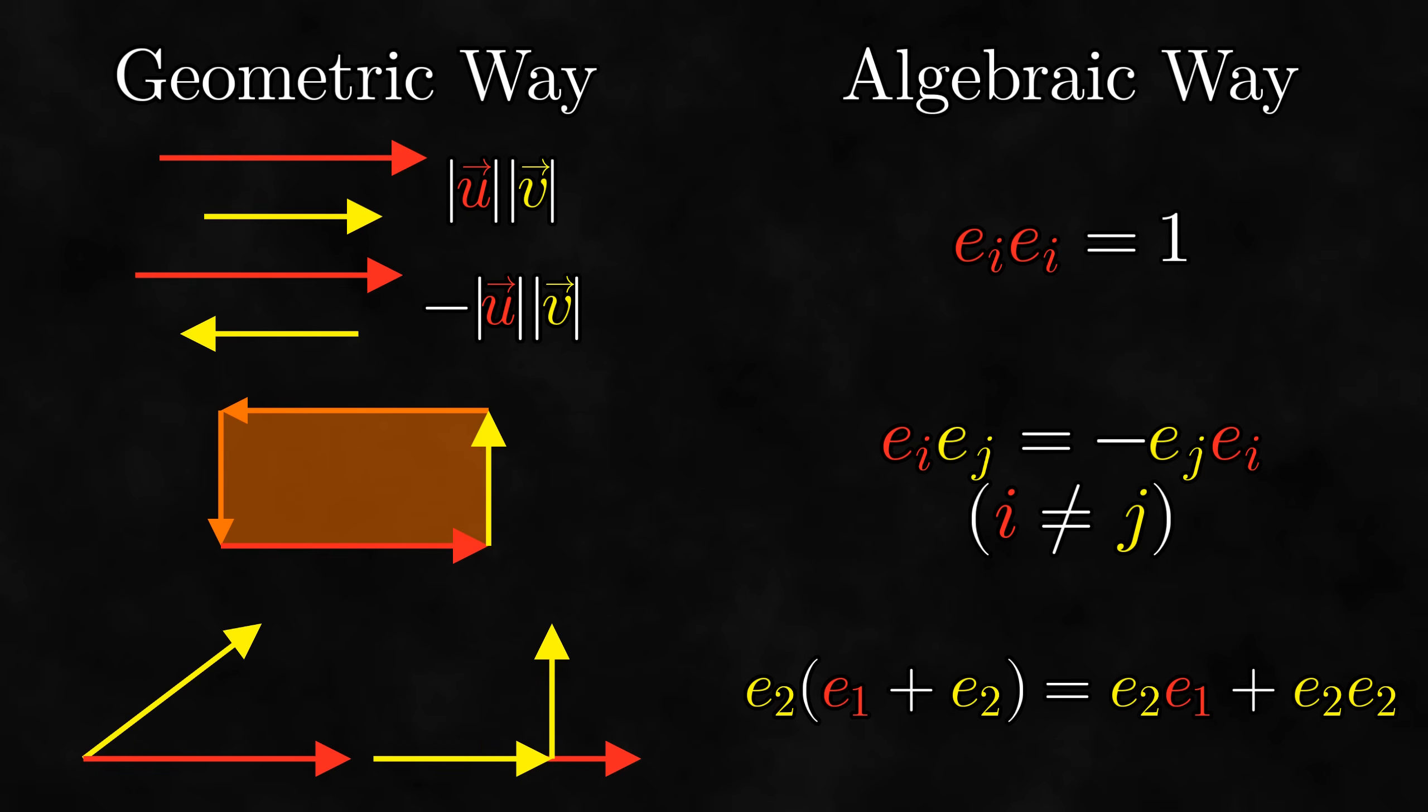Notice that we can line up the parts of the geometric and algebraic understandings of the geometric product. The multiplication of parallel vectors corresponds with the square of a basis vector, the multiplication of perpendicular vectors corresponds with the product of distinct basis vectors, and the splitting of a vector into parallel and perpendicular parts corresponds with how we use distributivity to calculate a product. This is a general feature of geometric algebra – when you run into a geometric idea, there is often a corresponding algebraic idea, and vice versa.